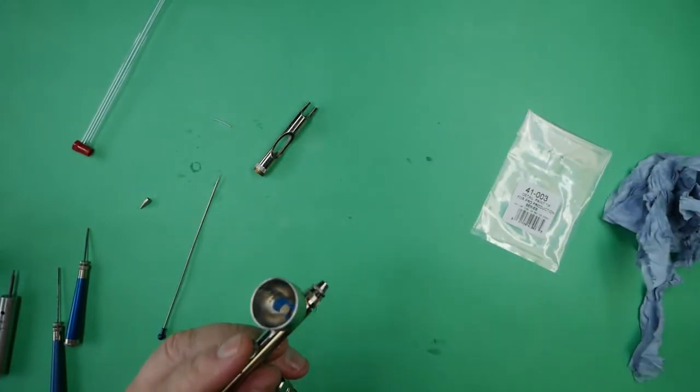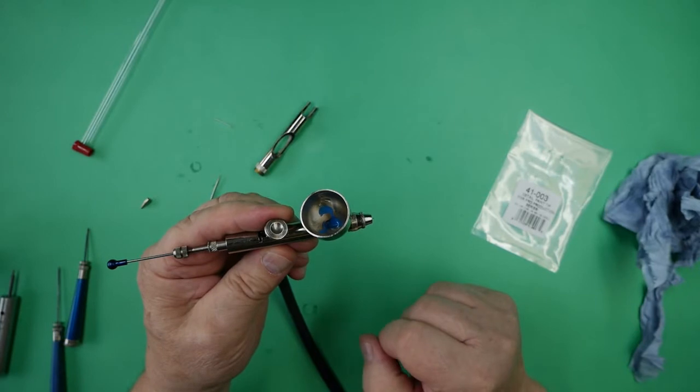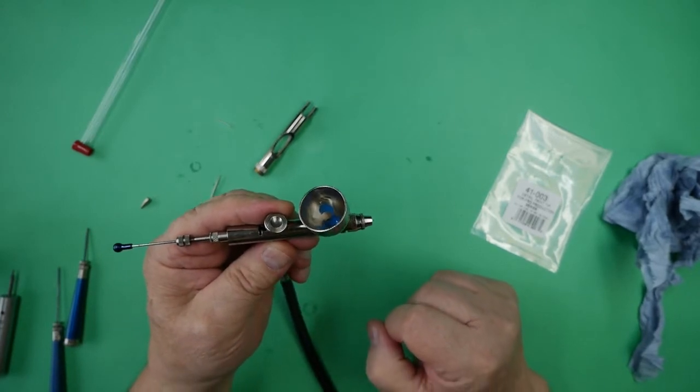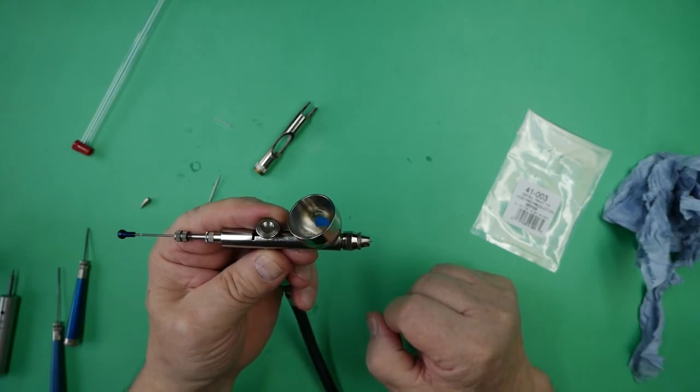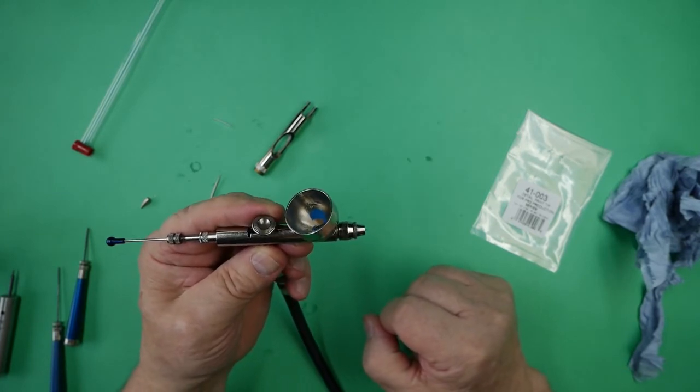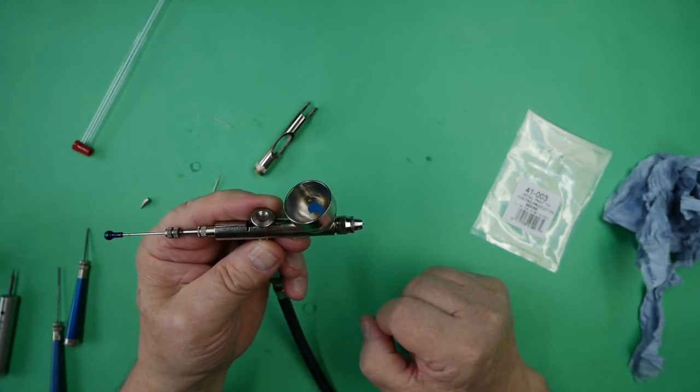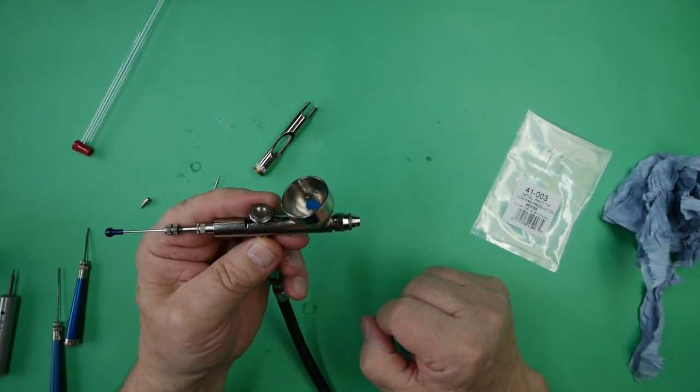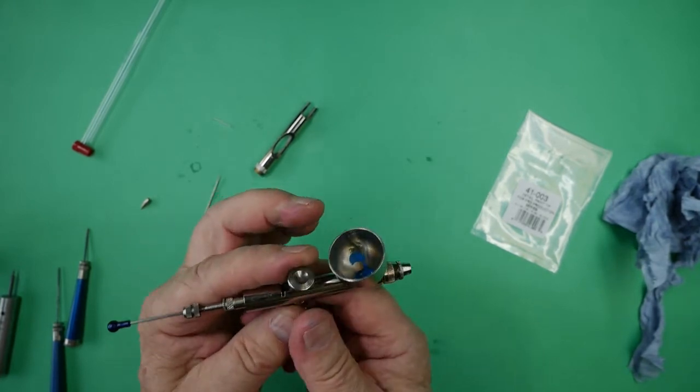So what I'll do now is just clean the blue paint out of the airbrush, clean all the needle up and everything, clean the tips out by blowing some cleaner through and checking it all over. Give it a good wipe down, just lubricate the needle back up again, and then get it posted off to the customer.